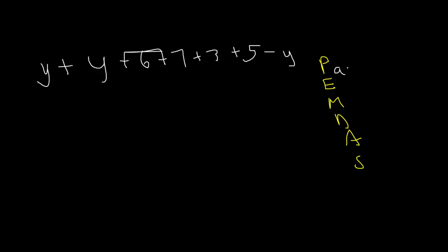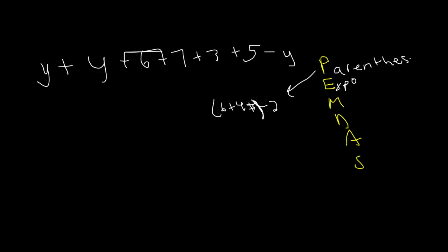The first thing we're going to want to solve in PEMDAS is parentheses. So any parentheses come first. For example, if we had 6 plus 4 minus 2, and we have parentheses around 6 plus 4, the first thing we do is whatever's in the parentheses. So 6 plus 4 is 10, and 10 minus 2 is 8.